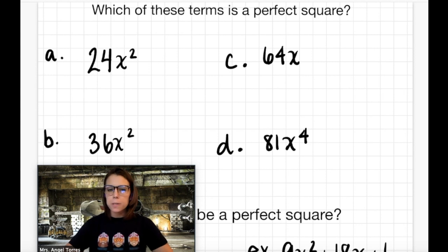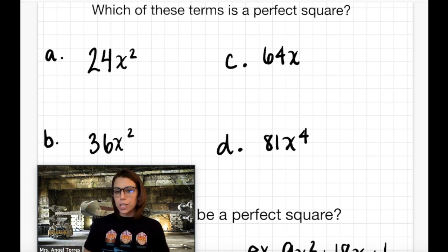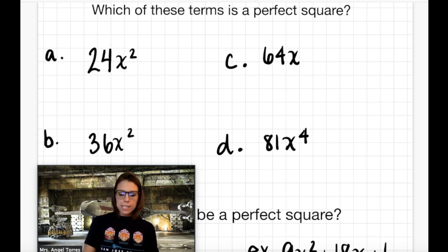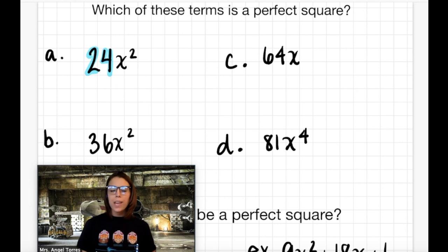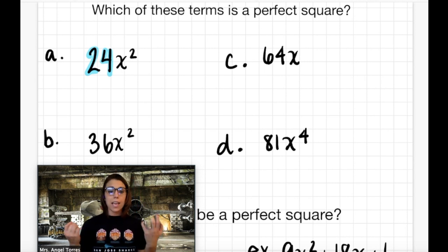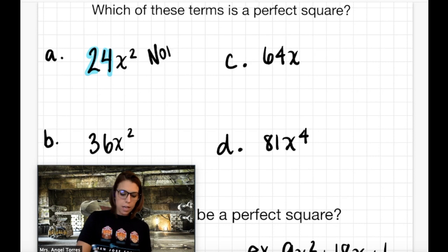Now let's see if we can figure out which of these terms is actually a perfect square, meaning could this be a potential area of a square? Let's take a look at letter A. The first thing that stands out is that the coefficient is 24. Is 24 one of our perfect squares? No, it's not. So this could not be a square because there is no way to have a length and a width exactly the same that multiply to equal 24. So we would say that this is not a square.